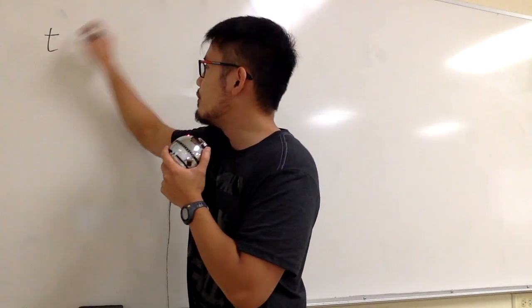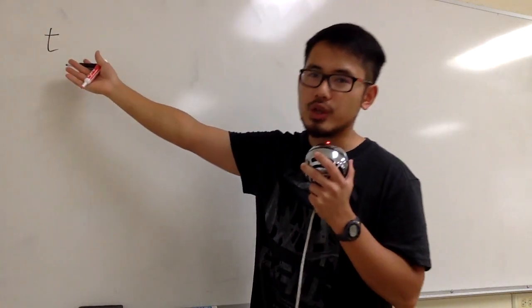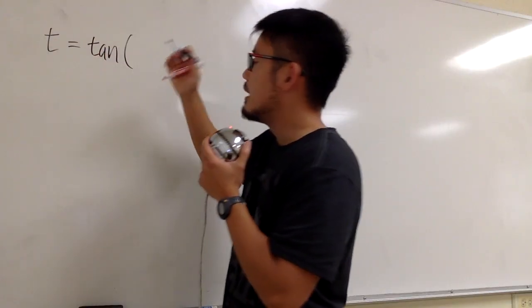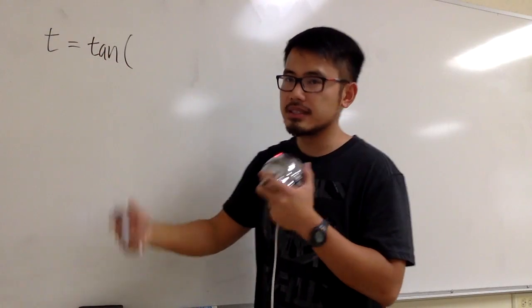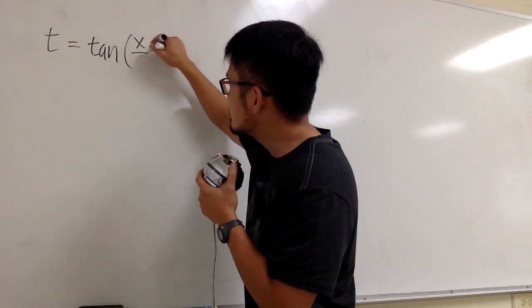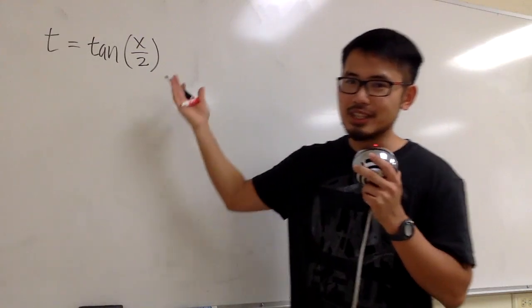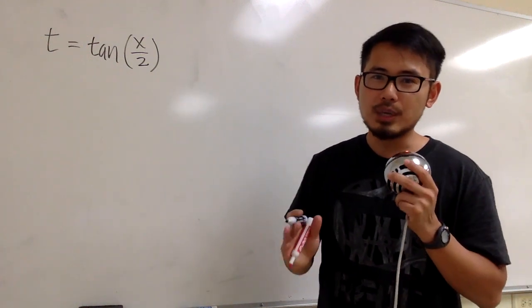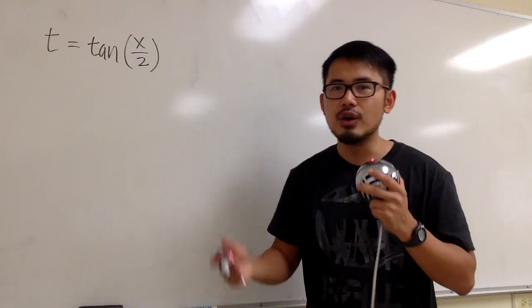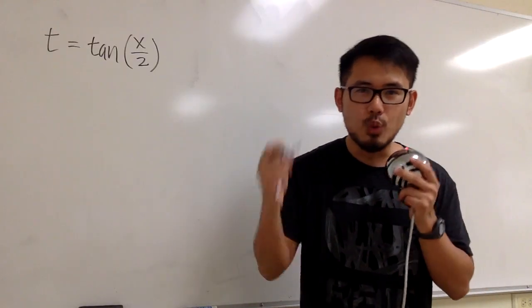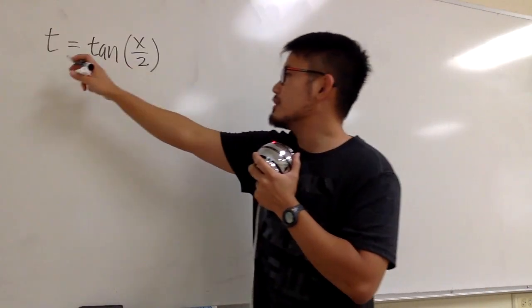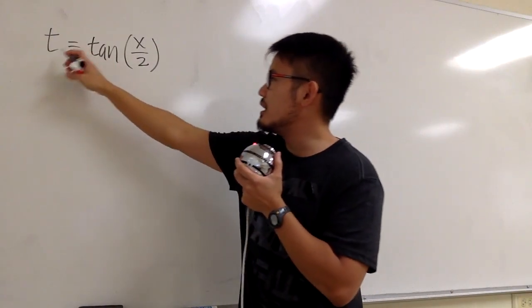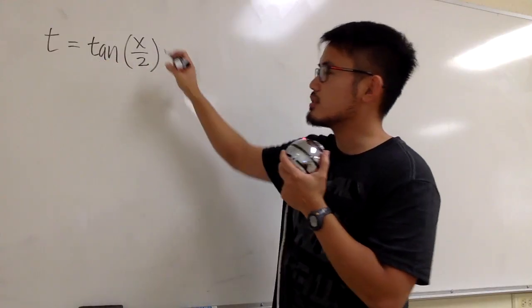We are going to use a new variable, and traditionally we call this t, and we set this equal to tangent of x over 2. This is also called the tangent half-angle substitution, because we let t equal to tangent of x over 2.